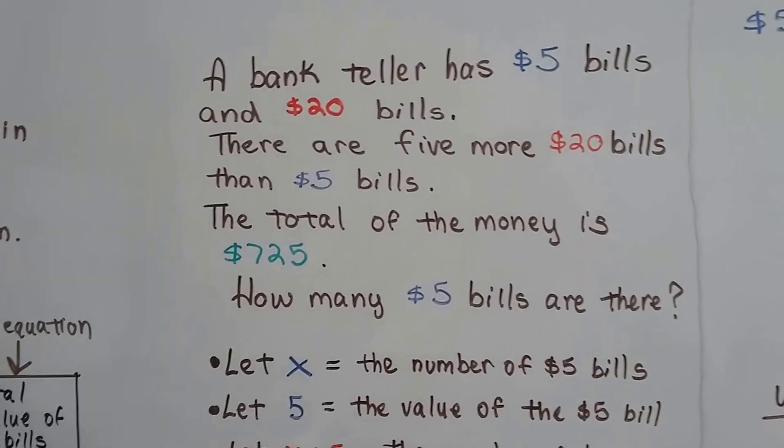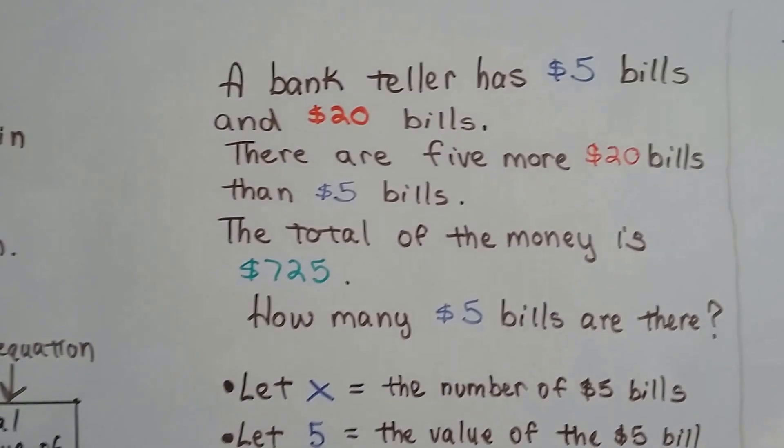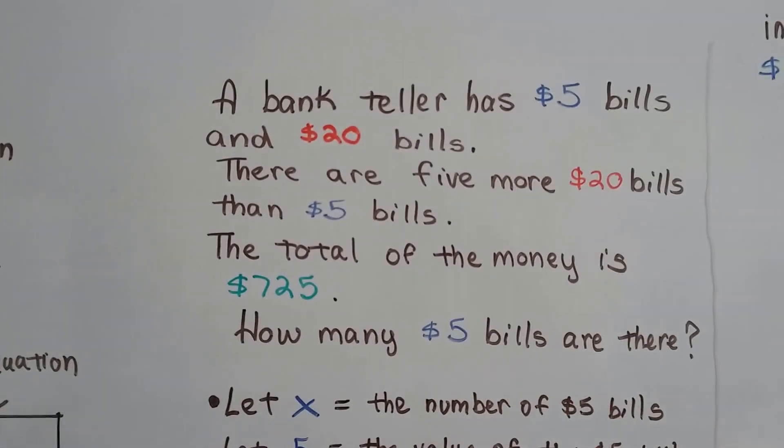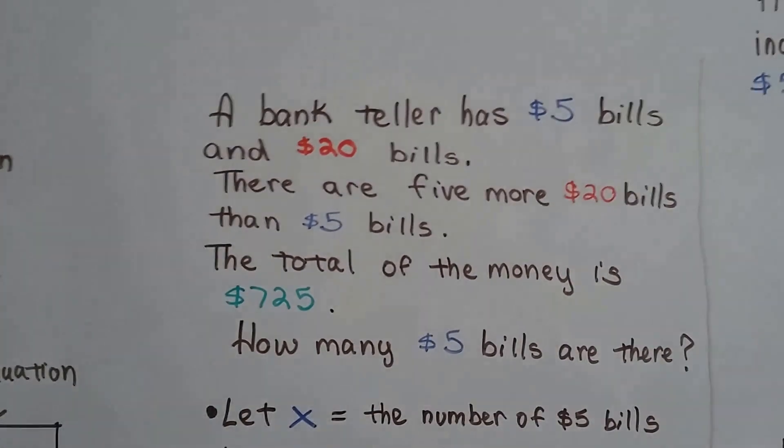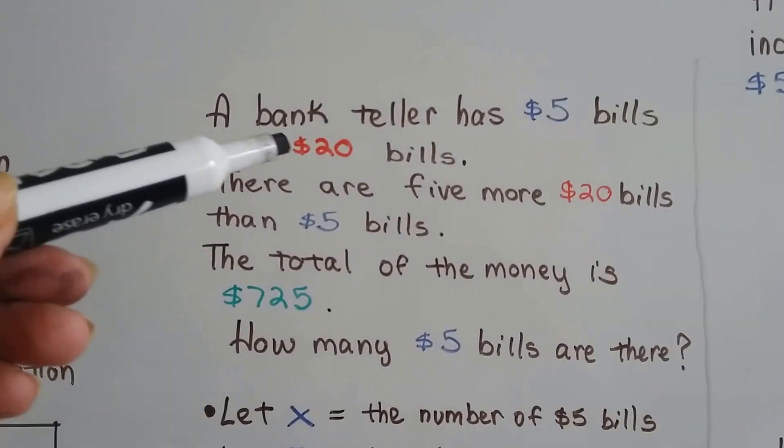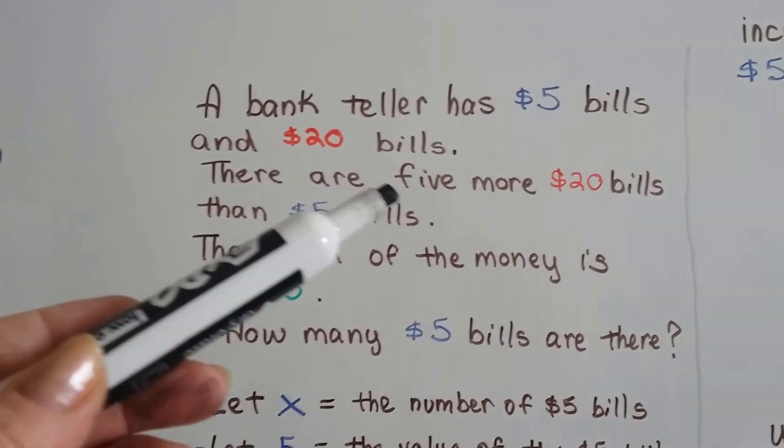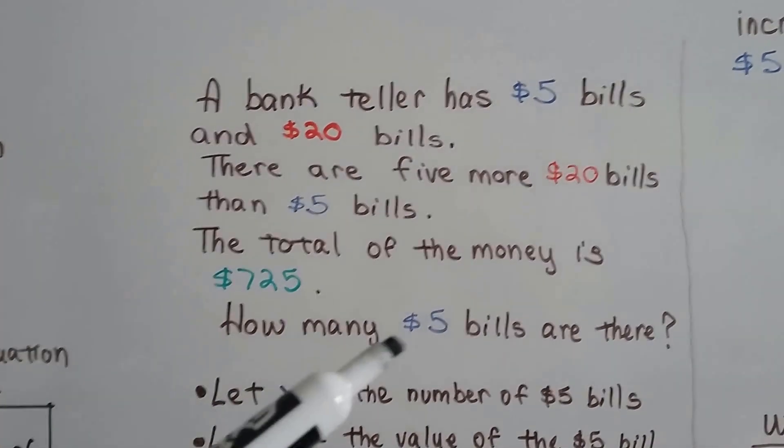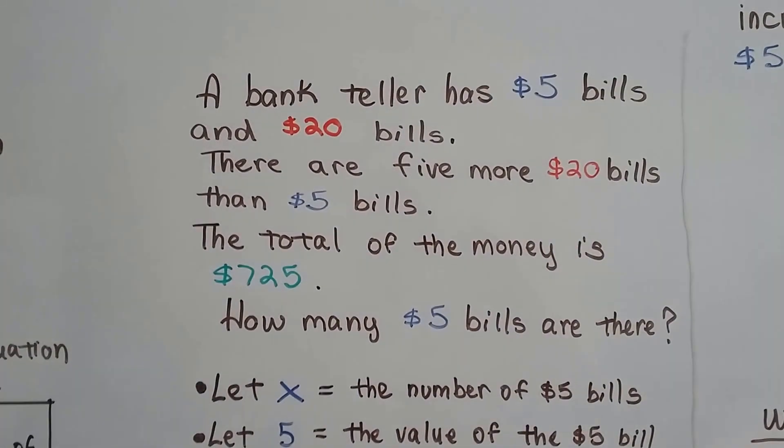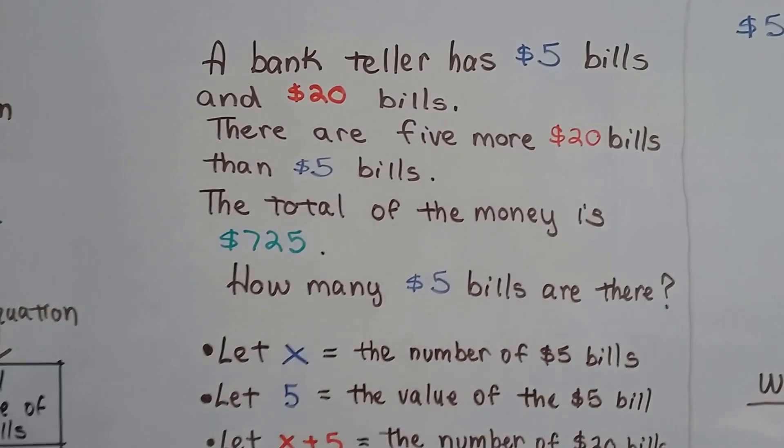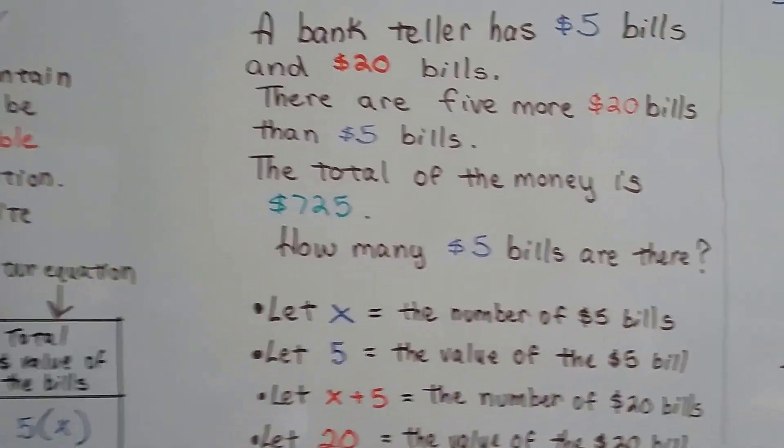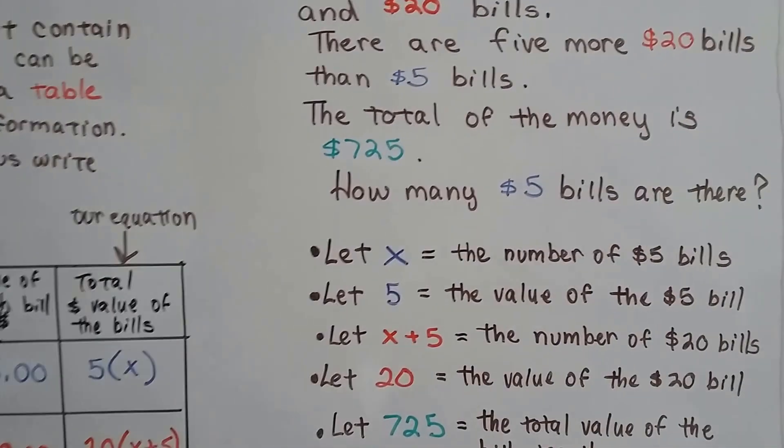We need to figure out, if we've got a total of $725, and there's $5 bills and $20 bills, and there's five more $20s than there are fives, how many fives are there? That sounds really confusing, doesn't it? But it's not really that bad if we just assign variables and make a table.